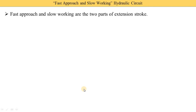When the tool or table is moving but cutting is not done, it is called the approach, and this approach requires fast speed or high speed — that's why it is called fast approach. Slow working means when the tool and workpiece come into contact and the actual operation starts, it is required with slow speed. That's why the second portion is named slow working.